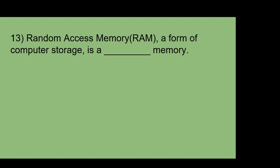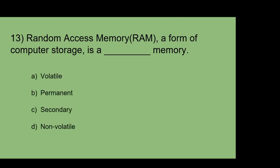Random access memory RAM, a form of computer storage, is a blank memory. Options: A: Volatile. B: Permanent. C: Secondary. D: Non-volatile. The answer is volatile.